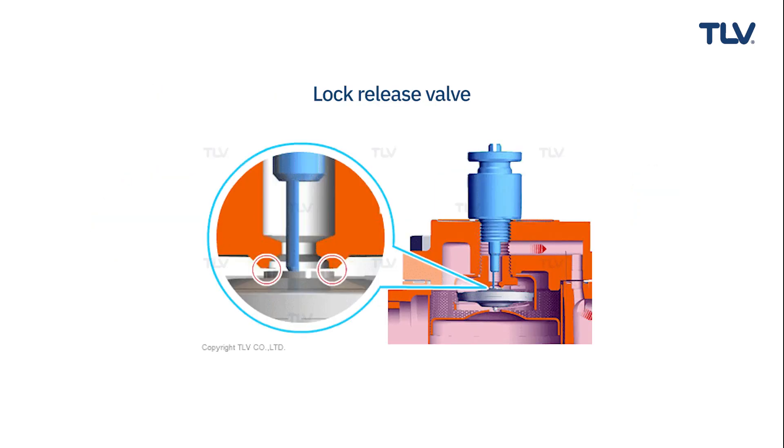A lock release valve uses the automatic venting feature of a steam trap, such as an X element, to forcibly open the valve and release steam to the outlet side of the trap, fixing the steam locking problem.